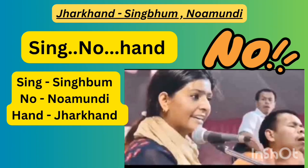Look at this image. If someone sings aggressively, we used to say no with hands, right? So in order to stop singing, we say no with hands. The shortcut is: 'Sing, No, Hand.' 'Sing' refers to Singpam, 'No' refers to Noamund, and 'Hand' refers to Jargund.